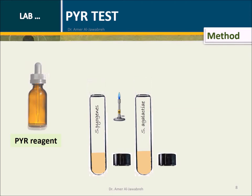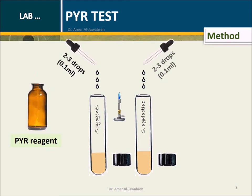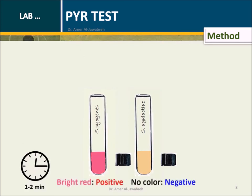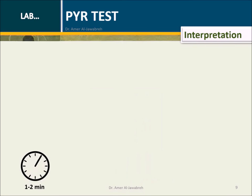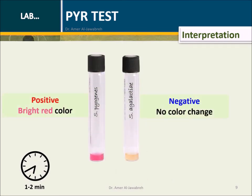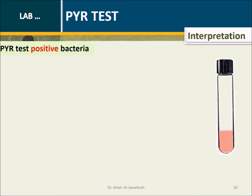Add two to three drops of PYR agent. Observe for color change within one to two minutes. Bright red indicates a positive result. No color change indicates a negative result.